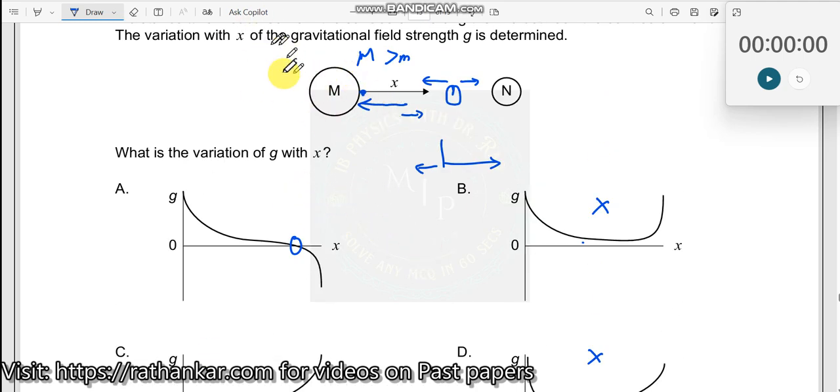On the other hand, the gravitational field due to capital M is larger compared to N. If I take this point and this point, if I consider the gravitational field at this point and the gravitational field at this point, which one will have a larger gravitational field? This will have a larger gravitational field because capital M is larger, and moreover we know g equals GM by r squared.